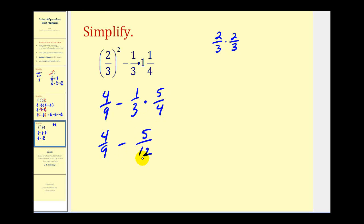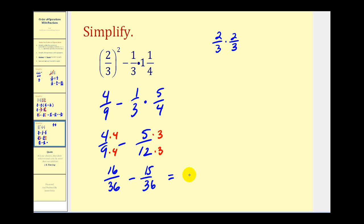To subtract these fractions we need a common denominator. The least common multiple of nine and twelve is thirty-six. Multiplying the first fraction by four over four and the second by three over three gives us sixteen thirty-sixths minus fifteen thirty-sixths. The denominator stays thirty-six, and sixteen minus fifteen equals one, so all of this simplifies to one over thirty-six.